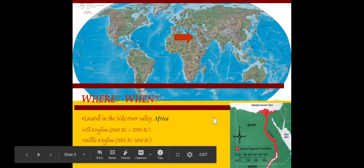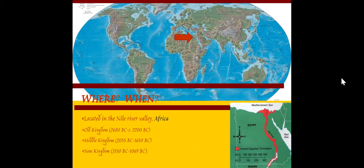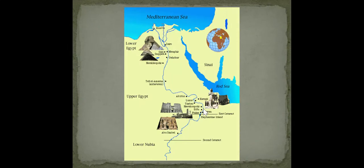Ancient Egypt — where is Egypt? It's located in the Nile River Valley in Africa, and usually it's divided into three different time periods: the Old Kingdom, Middle Kingdom, New Kingdom, and also sometimes people divide that into the Late Kingdom as well. We won't worry too much about time periods today — I just want you to be familiar with some examples of ancient Egyptian art.